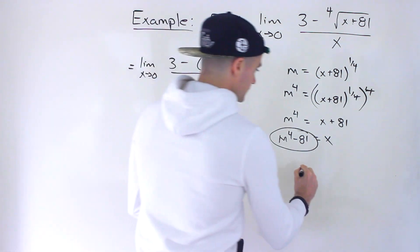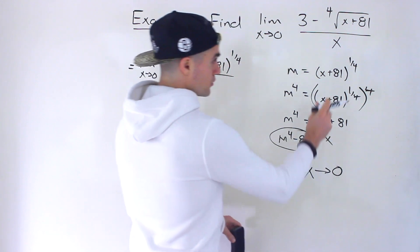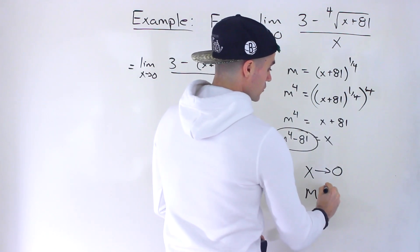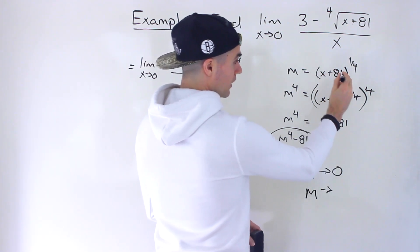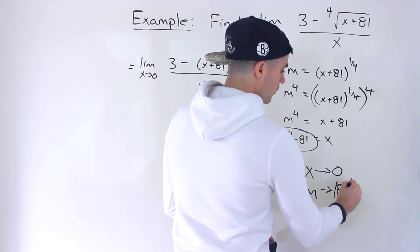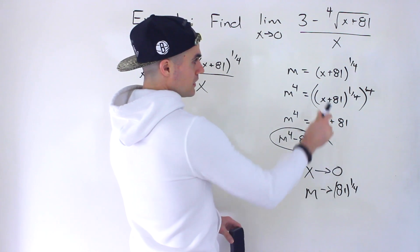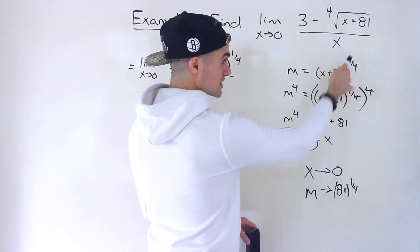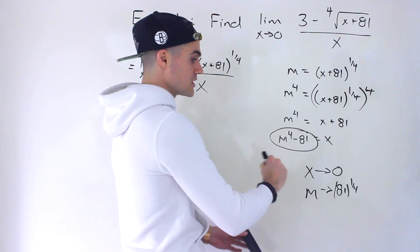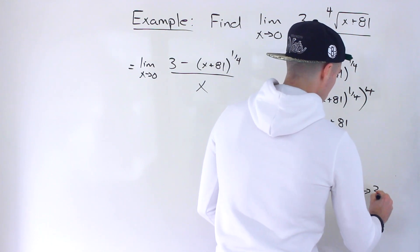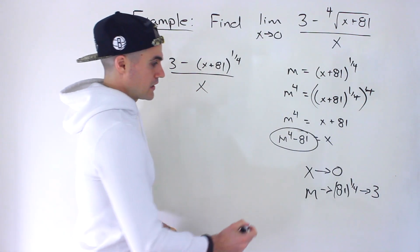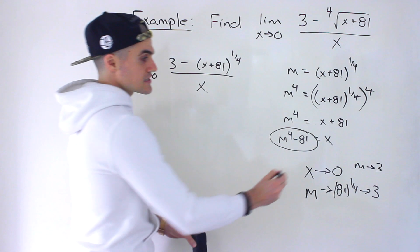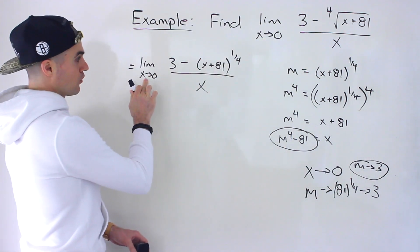Finally, what happens as x approaches 0? We look at the original substitution. As x approaches 0, m is going to approach 81 to the power of 1 over 4. As x approaches 0, we're left with 0 plus 81, which is just 81, and 81 to the power of 1 over 4 — the fourth root of 81 — is 3. So x approaching 0 is the same as m approaching 3.